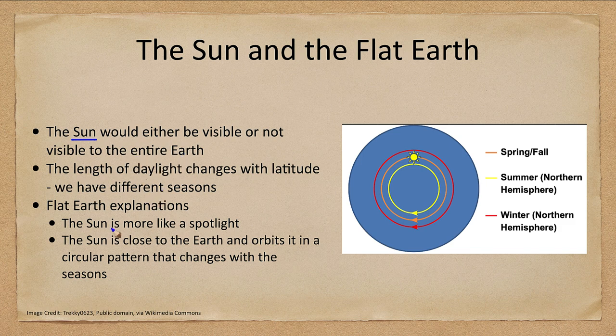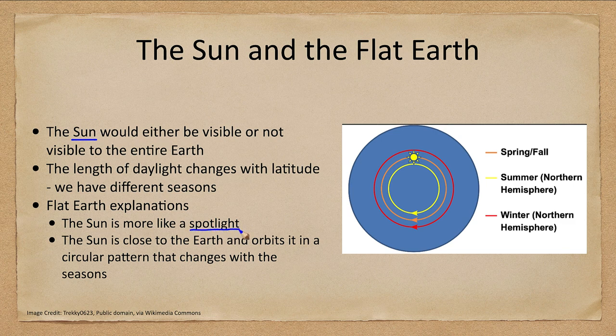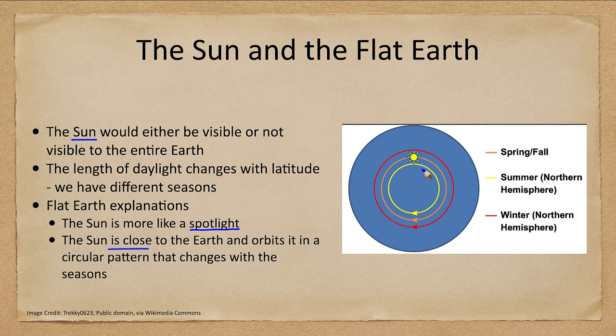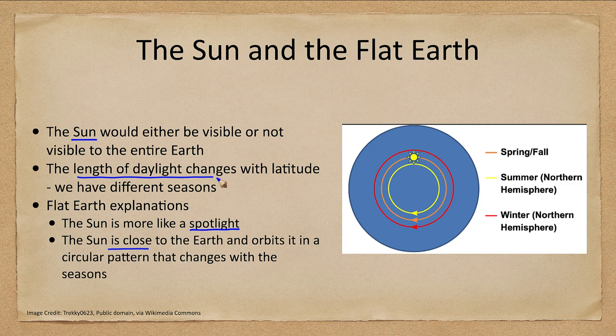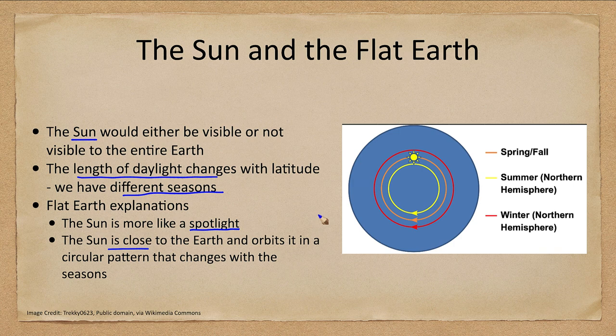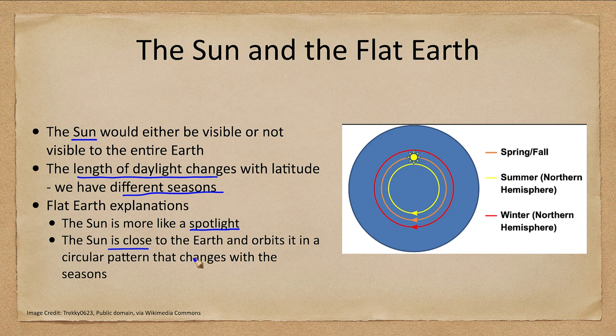It's much closer to Earth, and therefore you have some regions where you simply are not able to see it. The sun is much smaller than we say and much closer to Earth. We also note that the length of daylight changes with latitude and we have different seasons. That can be explained by the Earth's tilt as it orbits around the sun and the tilt of the spherical Earth.